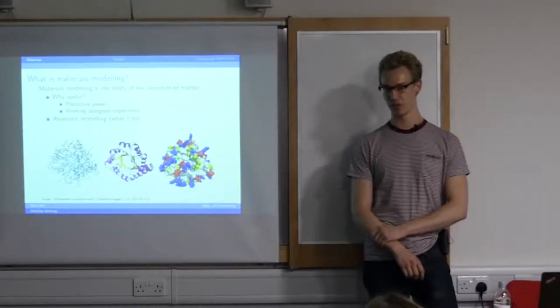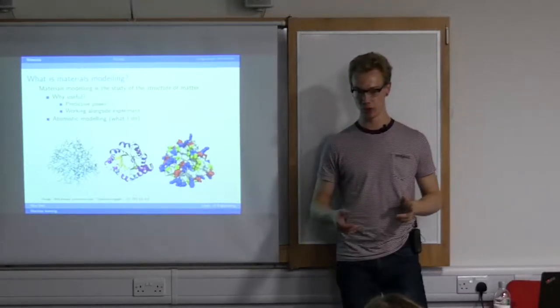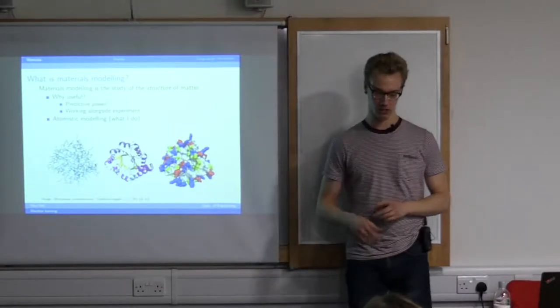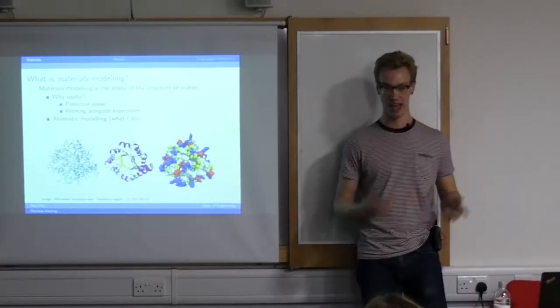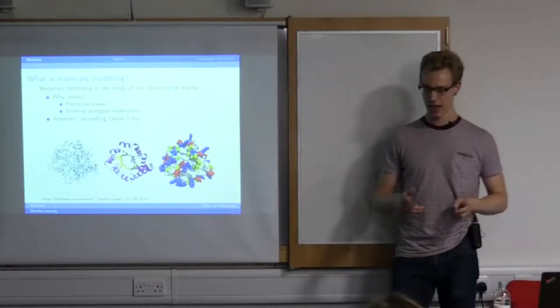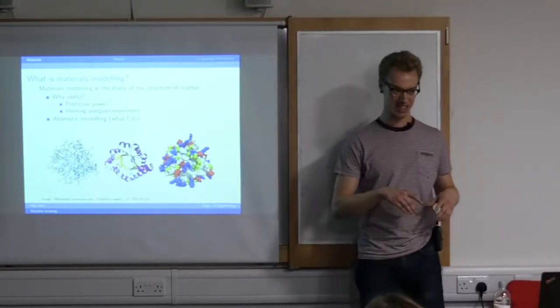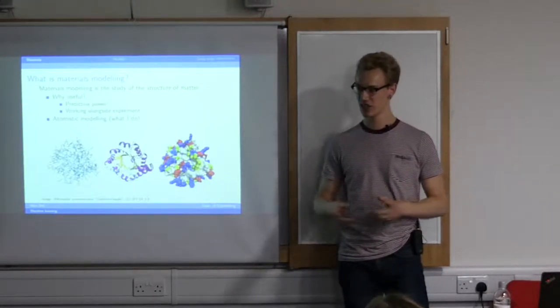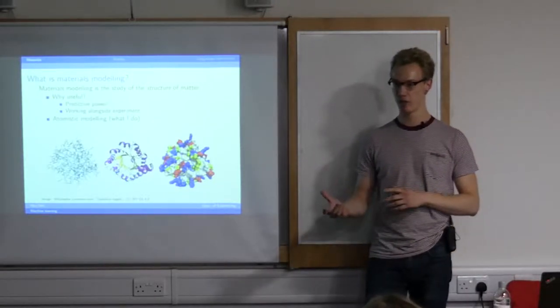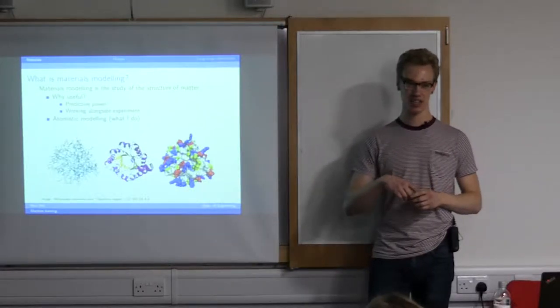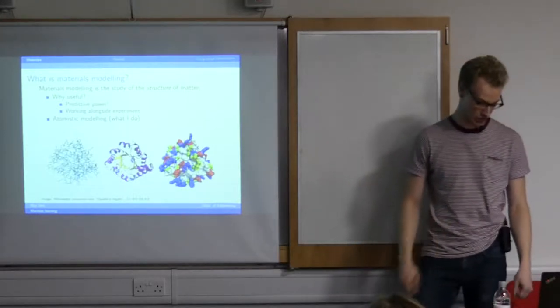So this is, of course, useful to us because we can make predictions. If our models are good, we can predict, for example, given the chemical composition of some sort of material, we can predict how it will behave in the real world. And we can also set up a useful feedback with experiments. So we can use our models to make predictions, which will tell experimentalists where the interesting things that we can look at. And then through that, experimentalists do experiments and tell us, you know, what are the deficiencies in the models? How can we improve them? What do we need to change?